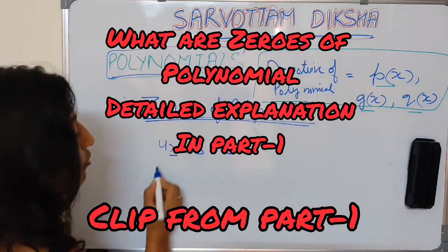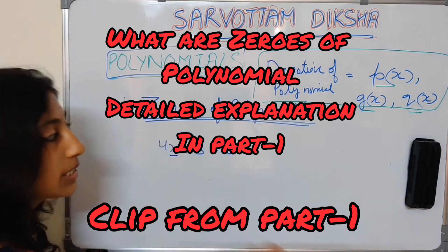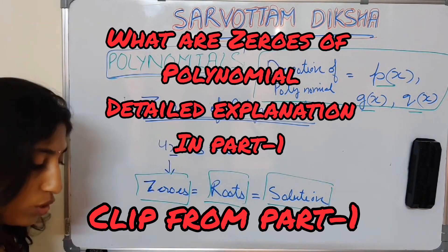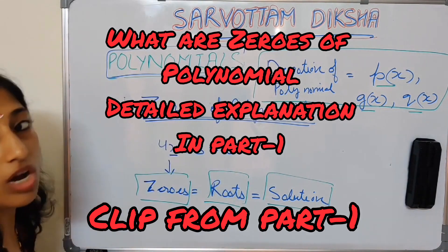So I will see for what particular value of x this whole thing will become 0. Those values for which the expression will become 0 are also called roots, are also called solutions, are also called zeros.